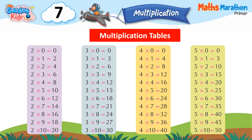5 into 0 is equal to 0. 5 into 1 is equal to 5. 5 into 2 is equal to 10. 5 into 3 is equal to 15. 5 into 4 is equal to 20. 5 into 5 is equal to 25. 5 into 6 is equal to 30. 5 into 7 is equal to 35. 5 into 8 is equal to 40. 5 into 9 is equal to 45. 5 into 10 is equal to 50.